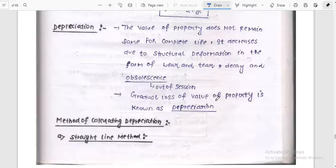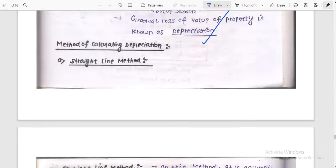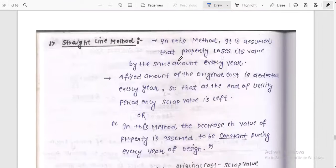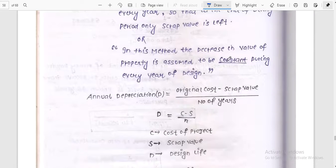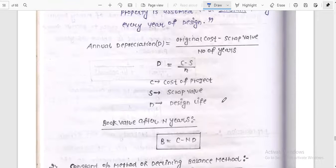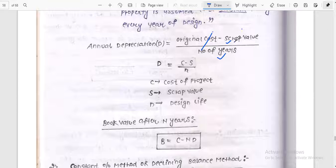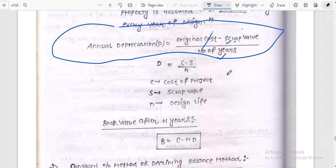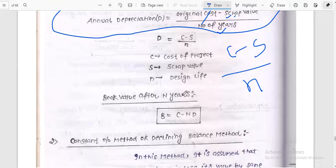Gradual loss of value of property is known as depreciation. Method of calculating depreciation is straight line method. In this method, it is assumed that property loses its value by the same amount every year. A fixed amount of the original cost is deducted every year so that at the end of the utility period only scrap value is left. In this method, the decrease in value of property is assumed to be constant every year of design. Annual depreciation is original cost minus scrap value divided by number of years. The formula is annual depreciation equals original cost minus scrap value divided by number of years. Book value is C minus nD.